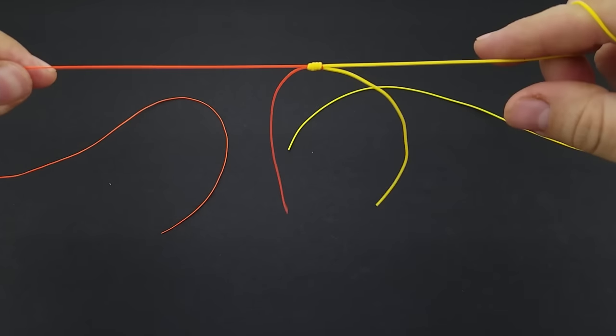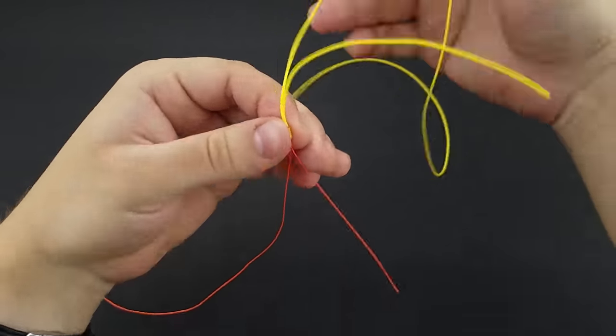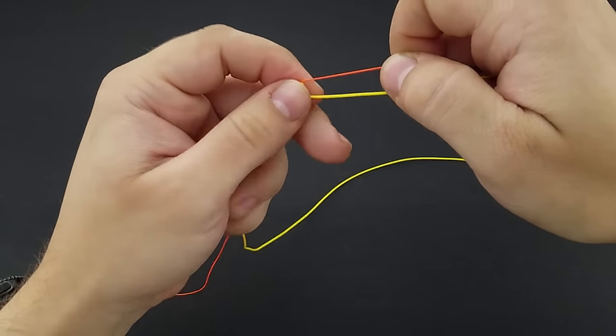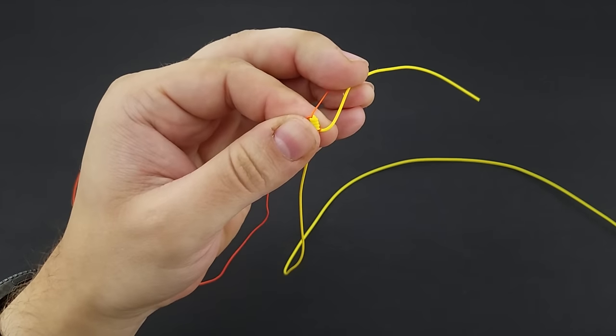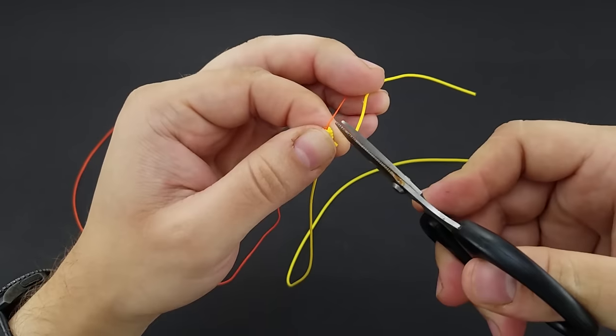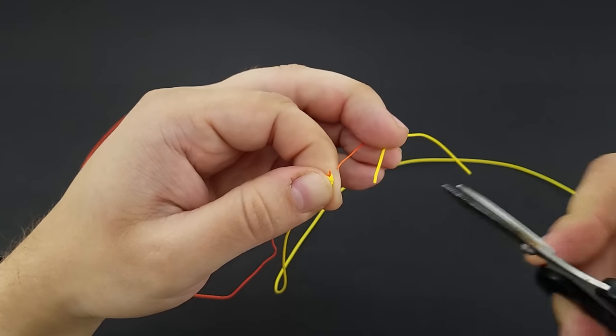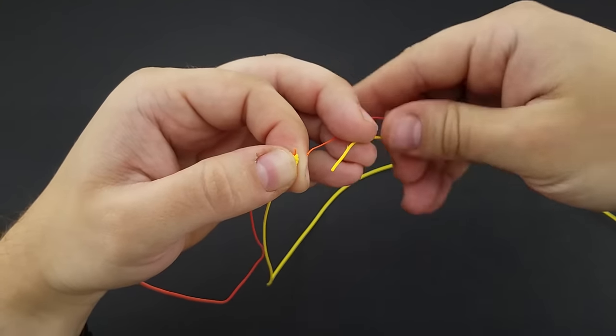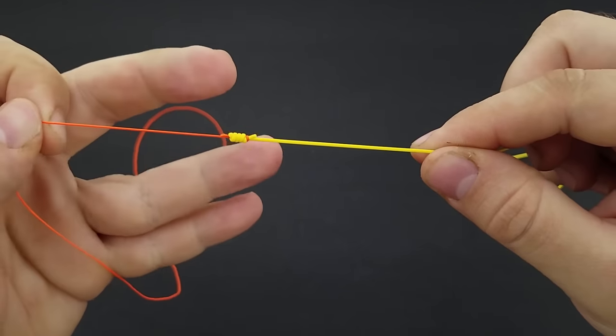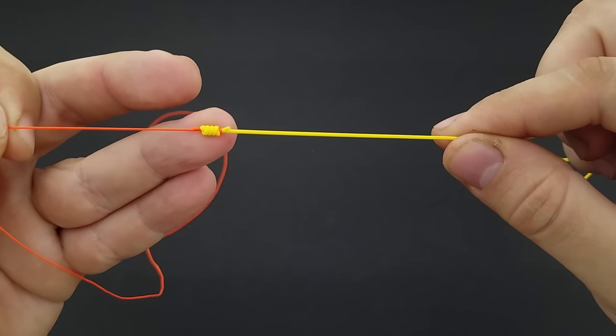Great. Now you'll have two tag ends to cut off there. I'll go ahead and do that right now. You can make these cuts pretty close to your knot. Looks great. With that, you'll have a completed Albright knot.